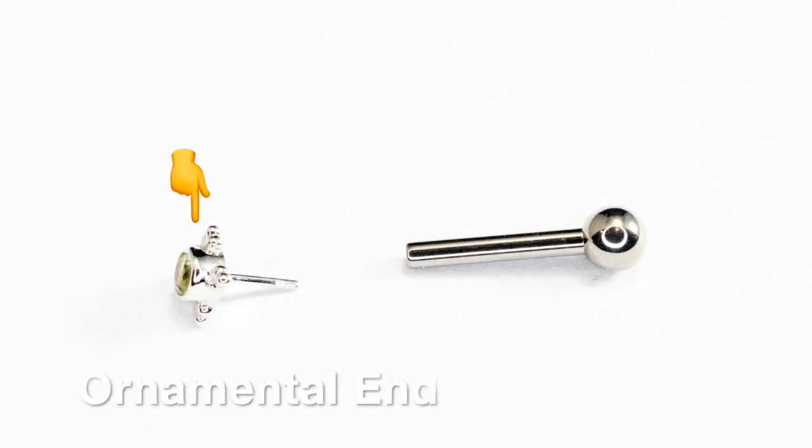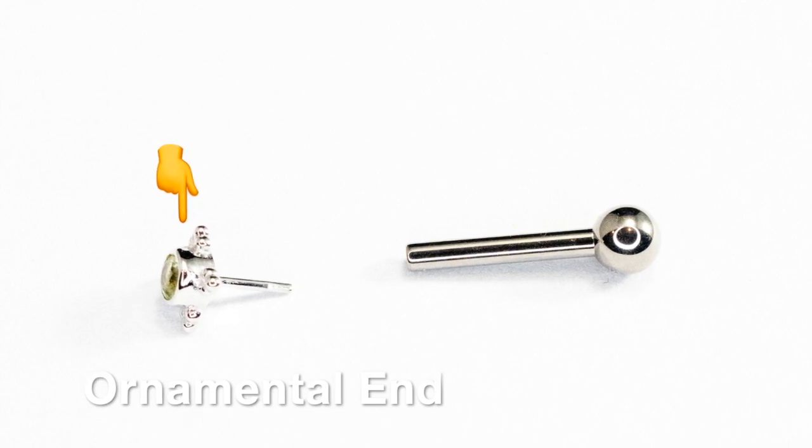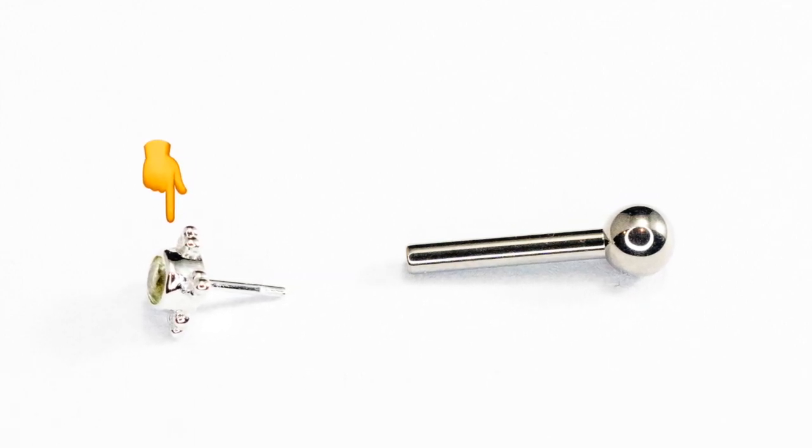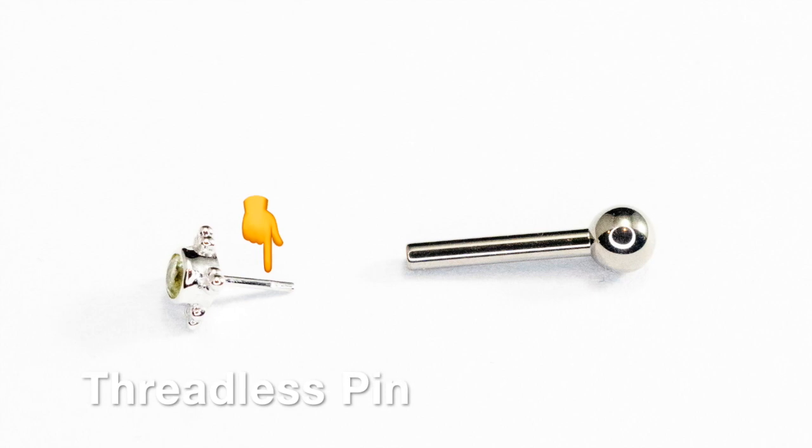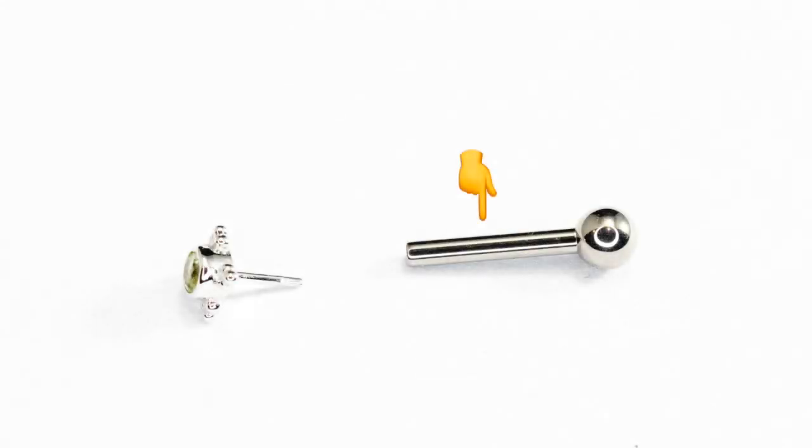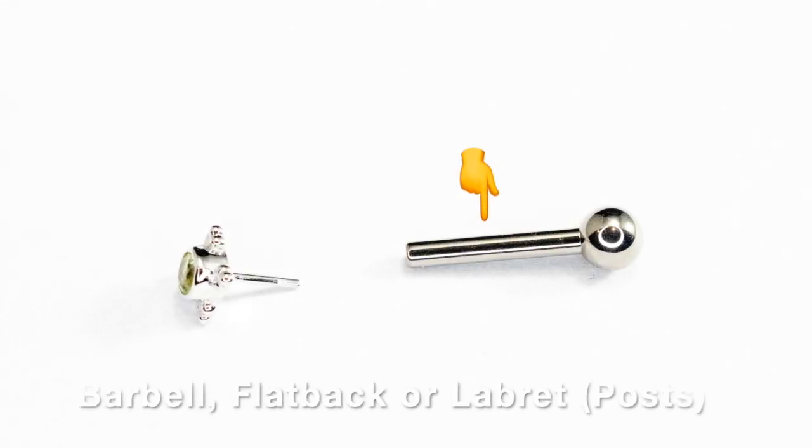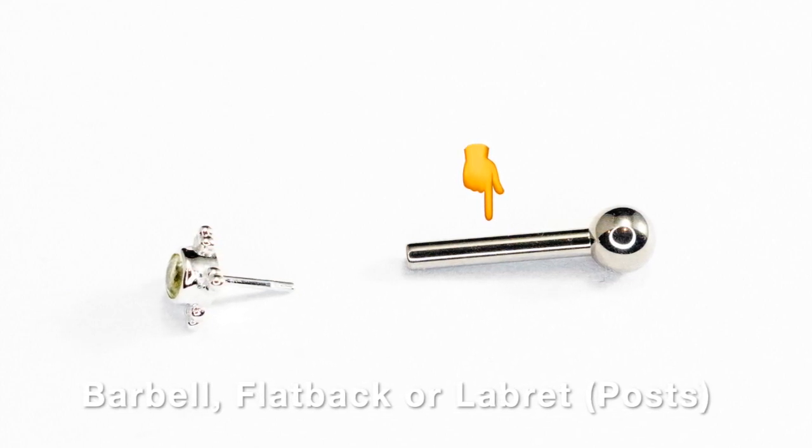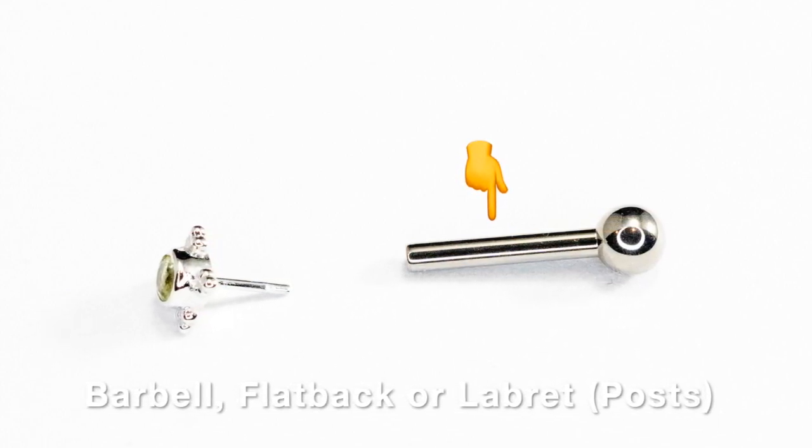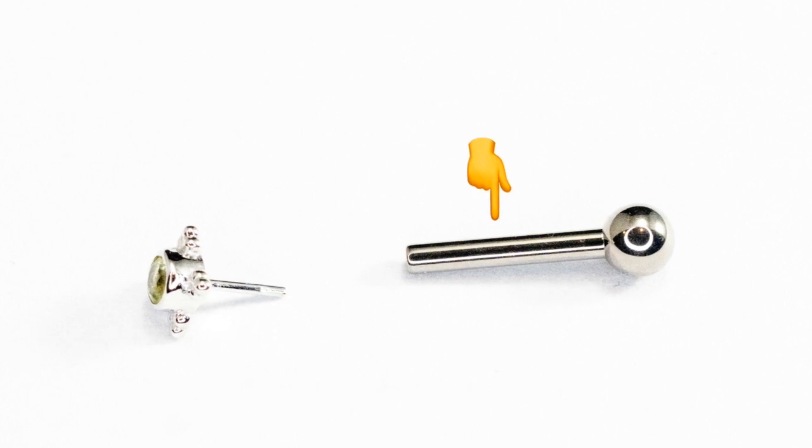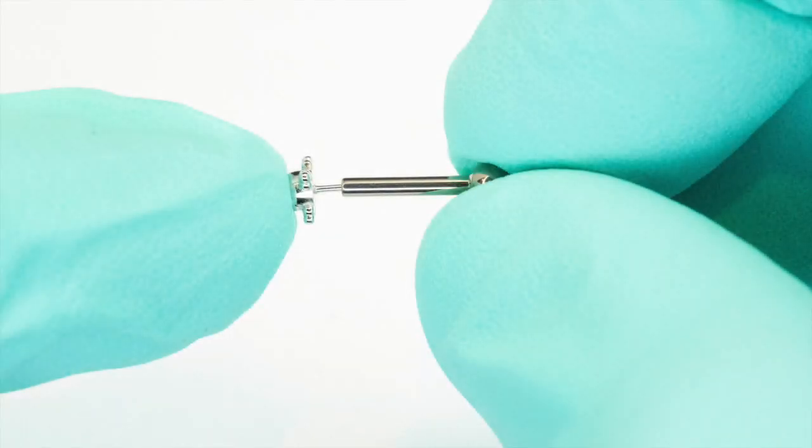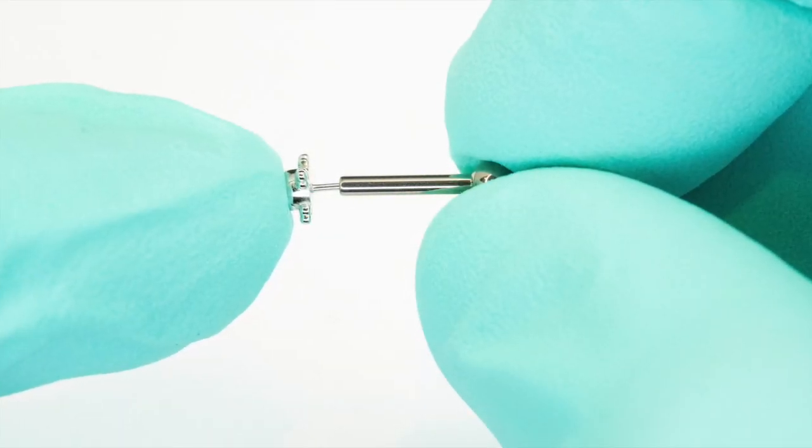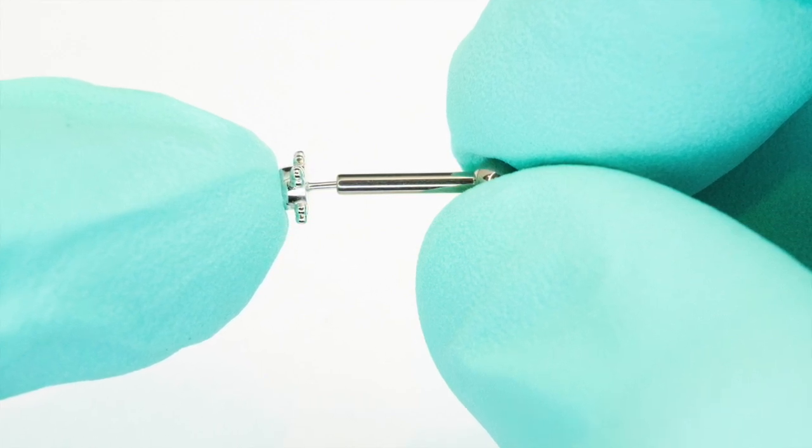Press fit jewelry has three main parts: the ornamental end and the threadless pin which are connected as one piece, and the barbell, libret or flat back that the end pushes into. I'll refer to flat backs, libretts, and barbells as posts in this video. That post is the part that's actually situated inside your piercing channel. The pin sits inside the post and secures the decorative end to your post.